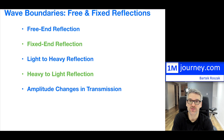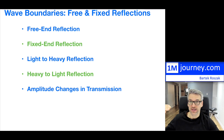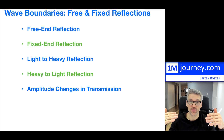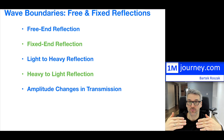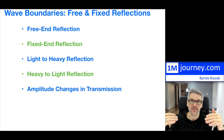We're going to simplify this so that you can understand what happens when waves or pulses pass along from one boundary to another, just in visual strings. It's easier to think about what happens to the transmission of the wave and also what happens to the reflection. We'll cover free-end reflections, fixed-end reflections, light-to-heavy strings, heavy-to-light strings, and how amplitude changes in transmission.